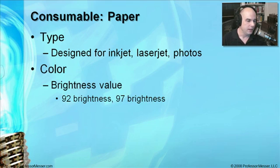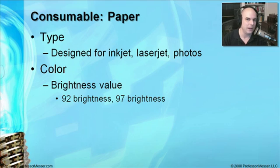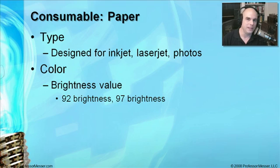There are also different colors of paper — not just red, yellow, and green, but also different brightness levels of white. You'll see this listed on the paper package, such as 92 brightness or 97 brightness. In the United States, we tend to calculate it based on a percentage, so 92 and 97 represent a percentage of brightness of white. There are also ISO ways to look at brightness levels, and you'll just have to refer to your paper to see how bright the whites are.